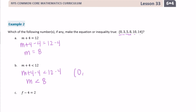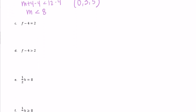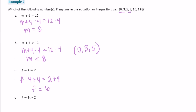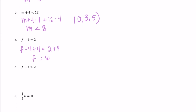Part c: f minus 4 equals 2. Solving: f minus 4 plus 4 equals 2 plus 4, so f equals 6. Since 6 isn't included in our choices, none of the options make this true.